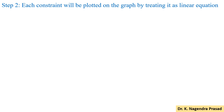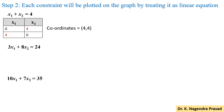The next step is that each constraint will be plotted on the graph by treating it as a linear equation. Before that, we have to determine the coordinates of each constraint. For the first constraint equation x1 plus x2 equal to 4: first consider x1 equal to 0 and substitute into the equation, then x2 value is 4.